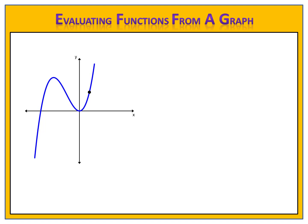On the graph are many points. We know that these points represent inputs and outputs. X is the input, so the input is 2. Y is the output, so the output is 3. In this function, the input of 2 produces the output of 3.